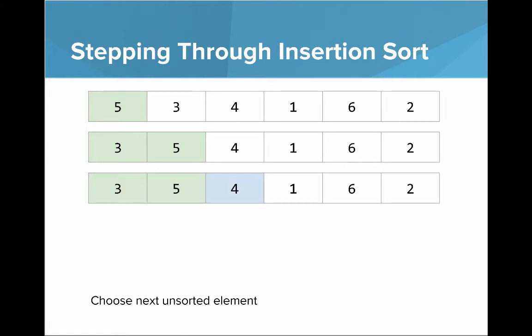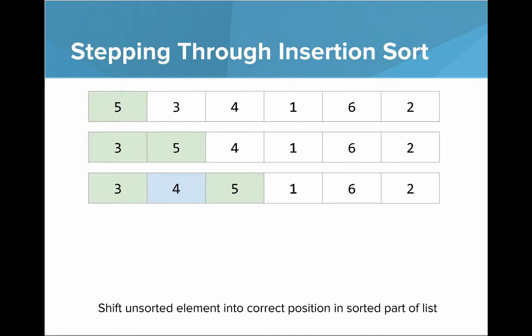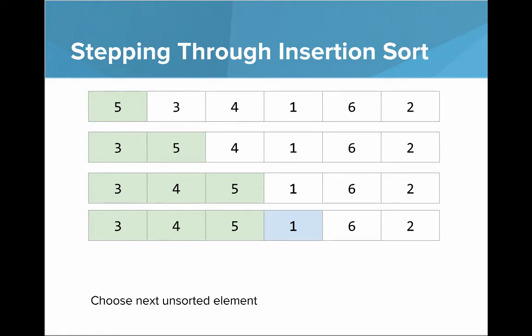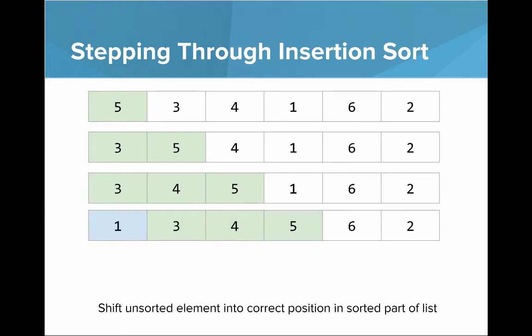We do that again. We choose the next unsorted element, which is a four, and we shift that unsorted element into its correct position in the sorted part of the list. Now that left part of the list is sorted. Now we choose the next unsorted element, which is a one, and we shift it into its correct position, which is right at the start.